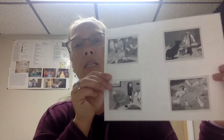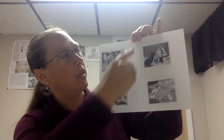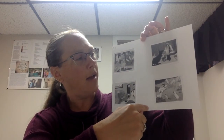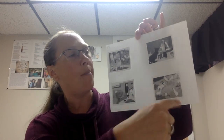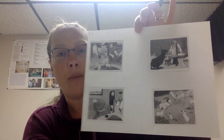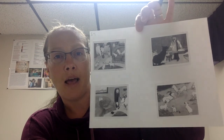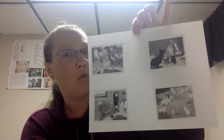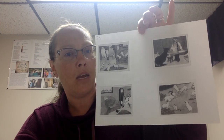So today, I want you to take a piece of paper and draw a line down the center, draw a line across, and you're going to have four boxes. I want you to draw a picture and retell the story of the wolf and the seven kids.